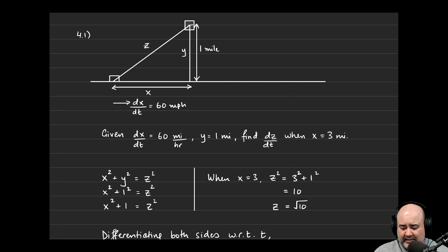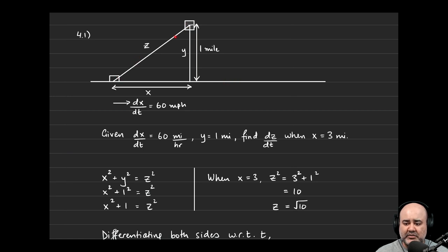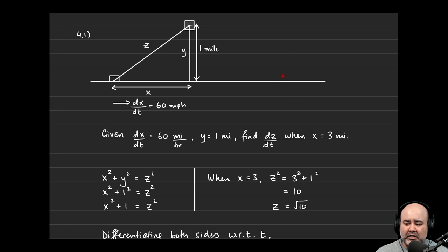Here we have: that's the house, that's the highway, that's the intersection, and that's the car. The car is going to the right. This distance z is changing as the car goes from left to right. The y distance does not change, so it's a constant. And dx/dt, as we're given, is 60 miles per hour. What we need to find is dz/dt — how fast is the distance between the house and the car changing when the car is exactly three miles past the intersection, i.e., when x equals three?